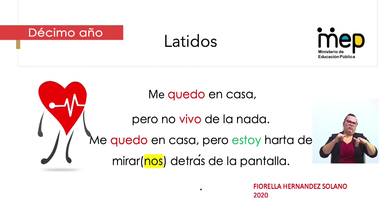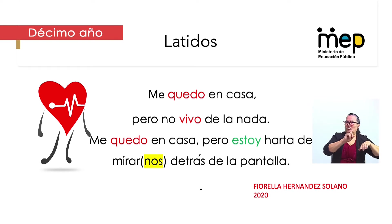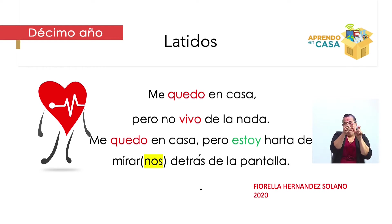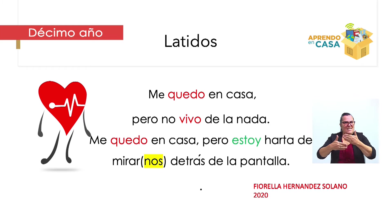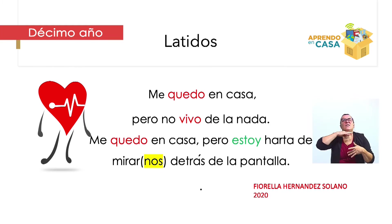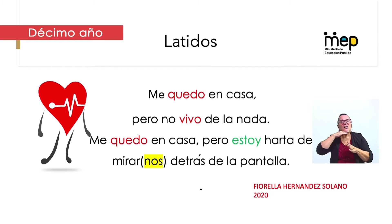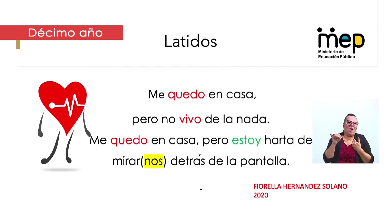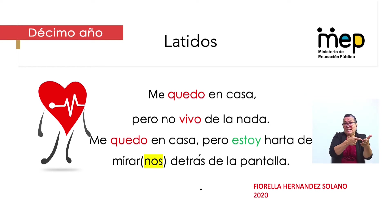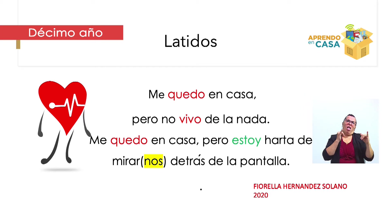¿Qué significa un verbo de estado? Que no es una acción, sino que el sujeto, el hablante, implica que está en un proceso de estado. En este caso, 'estoy harta'. ¿Sabes qué es 'harta'? Es como decir estoy cansada. Perfecto. Parte de la canción lo que nos dice es que ella está en la casa, pero está cansada de tener que estar detrás de una pantalla viendo a la persona.